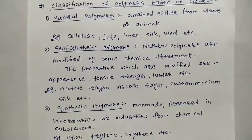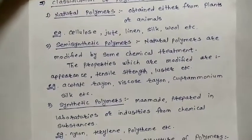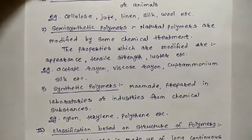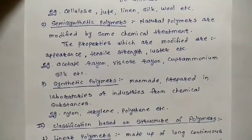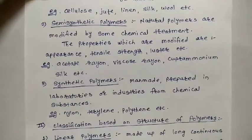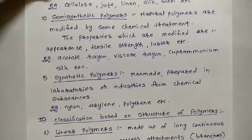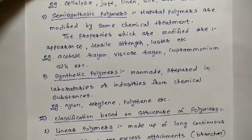Such modified natural polymers are known as semi-synthetic polymers. Examples include acetate rayon, viscose rayon, and cuprammonium silk. The third type is synthetic polymers — these are manmade polymers prepared in laboratories or in industries from chemical substances.